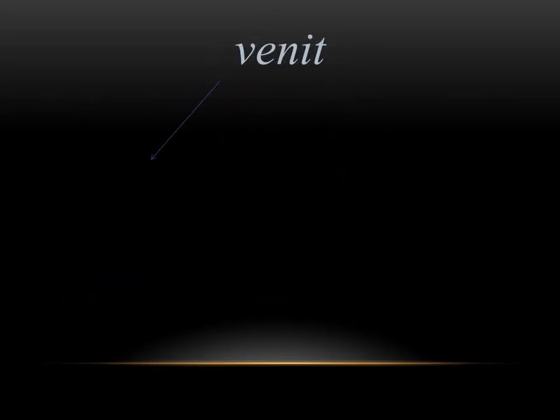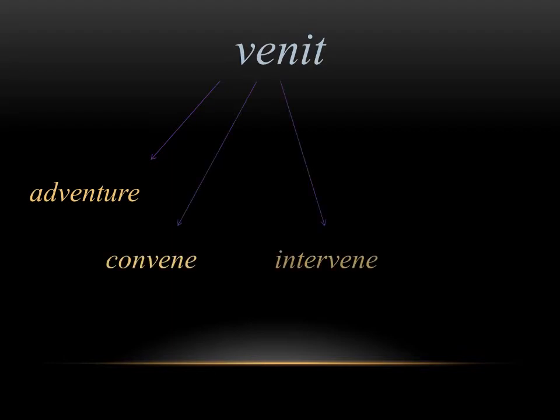From venit, we get the English derivatives of adventure, convene, intervene, and prevent. The word venit means he or she comes in Latin. If you think of the word adventure, it's going off on a journey — you're going somewhere. And if you think of convene, you're coming together. All four of these words in English are holding onto that exact same meaning as the Latin.